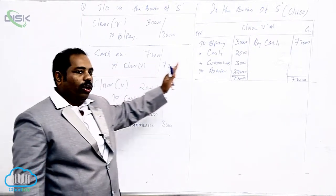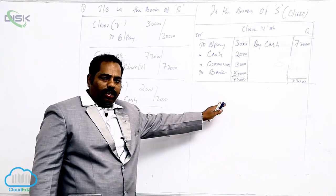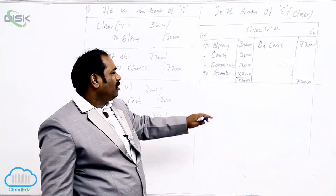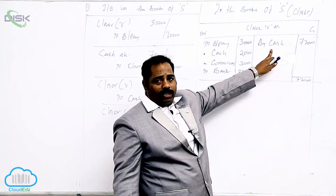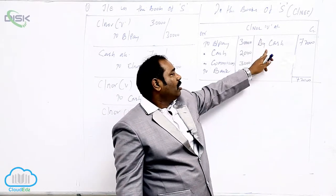From journal I taught you the posting in the ledger. Now directly we'll do the ledger. Always sales will come on the credit side because Kanzai becomes creditor to us. The Kanzai is creditor.